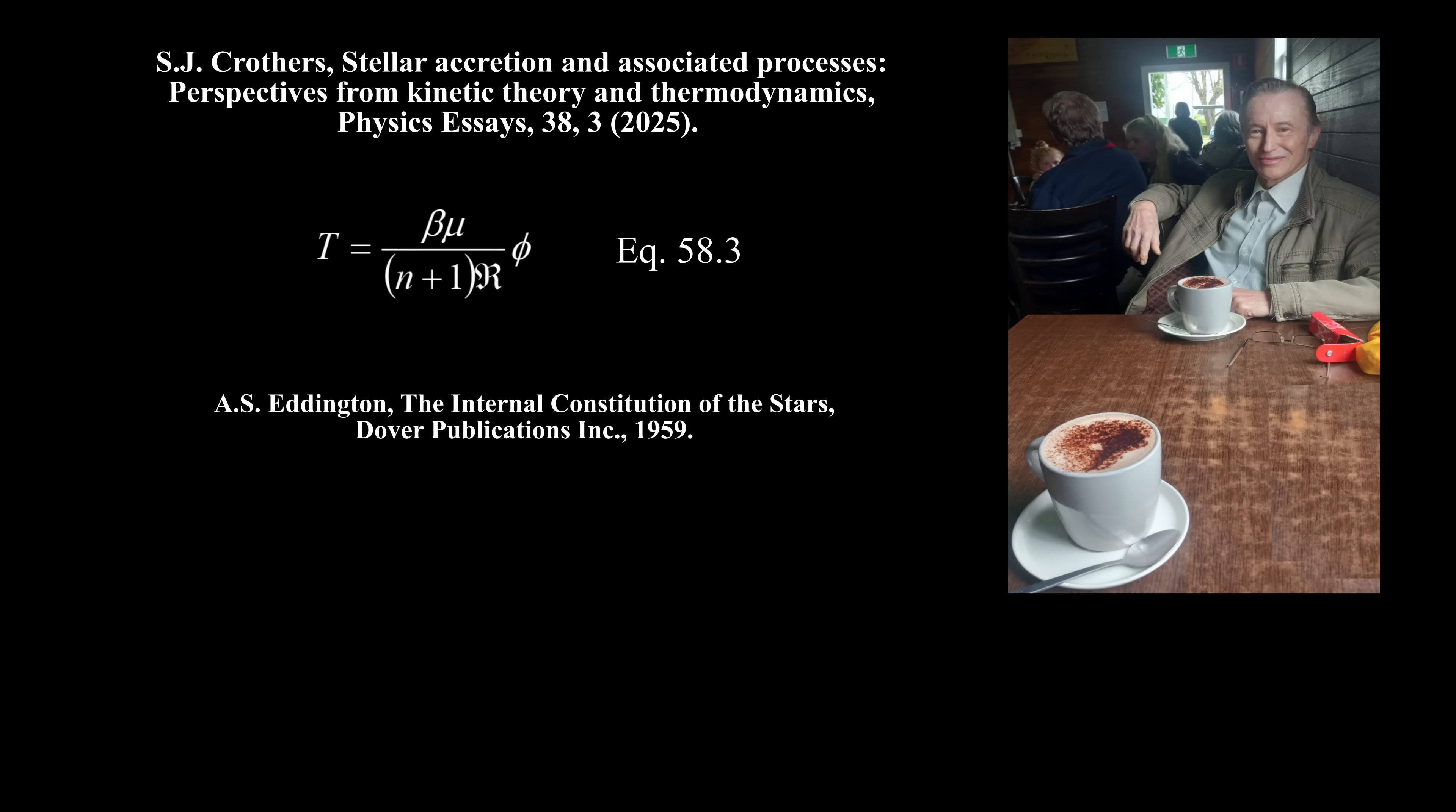In his book, Eddington, in similar fashion, combined the kinetic theory of an ideal gas with gravity to find stellar temperature, at his equation 58.3. Here, the constant beta is the quotient of the gas pressure to the total pressure. Mu is the molecular weight in terms of the hydrogen atom, R is the universal gas constant and phi is the gravitational potential. First, the left side of Eddington's equation is intensive, but the right side is extensive, so it is thermodynamically unbalanced. Secondly, Eddington assigns temperature to gravitational potential energy, when potential energy has no temperature. Hence his equation is false.